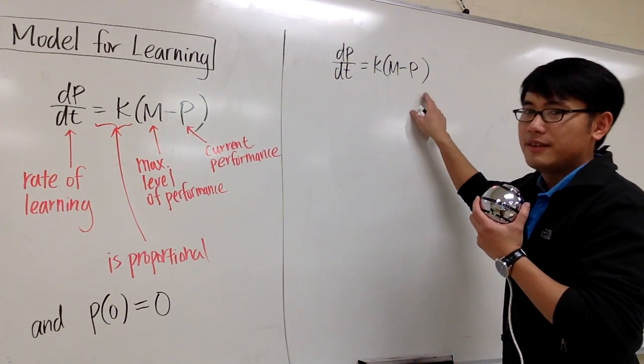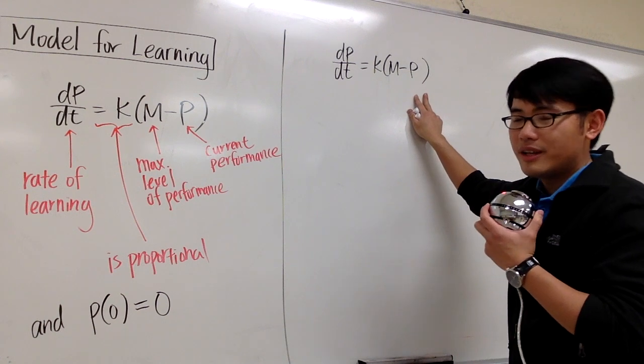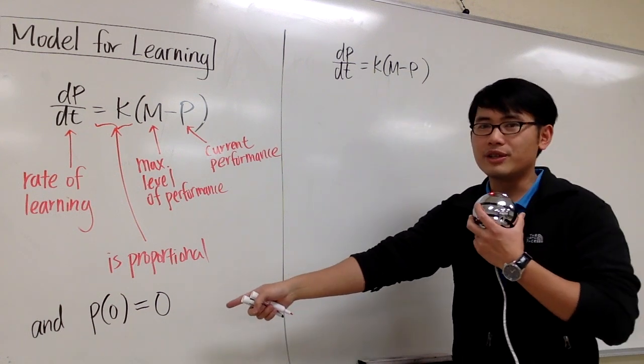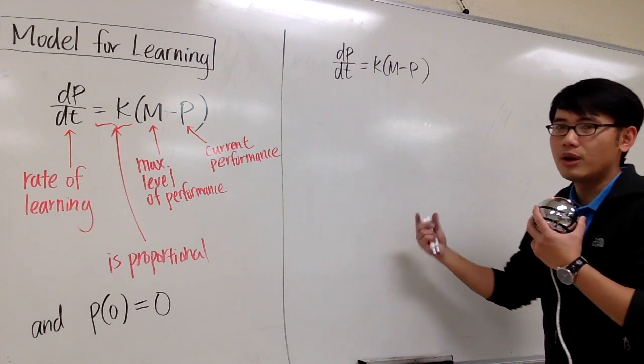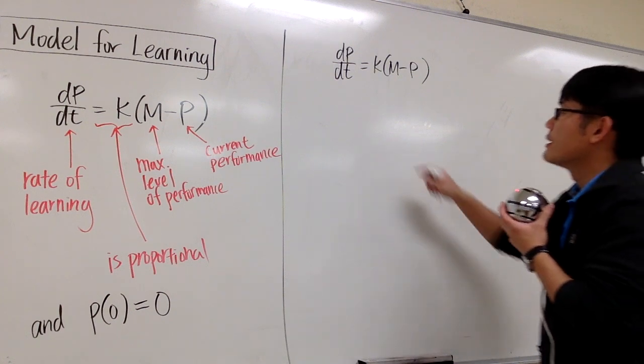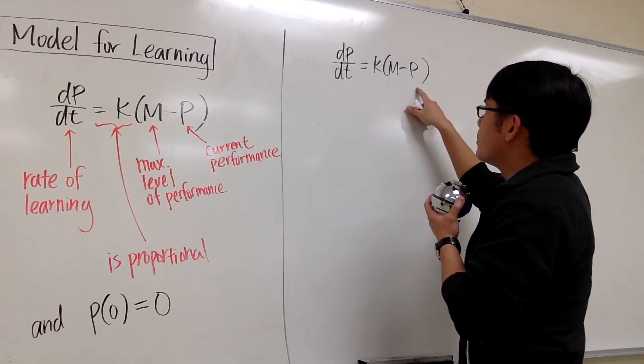Anyways, our goal is to solve this differential equation, and also have to use that initial condition, and we'll also take a look at what's the limit of p of t. As you can see, this is a separable differential equation.